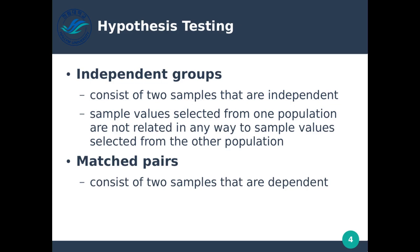Here we look at independent groups. If we have independent groups, these consist of two samples that are completely independent — the sample of one does not affect in any way the sample of the other. Think about people eating breakfast east of the Mississippi and west of the Mississippi. As long as we sample them at the same time, they're not going to affect each other. Sample values selected from one population are not related in any way to sample values selected from another population.